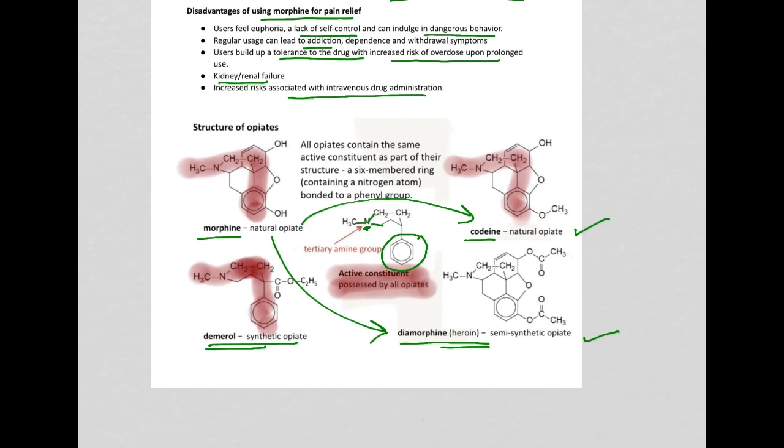It's called tertiary amine. Now, the differences between the structures: If you notice morphine, it has two OH, these are hydroxyl groups. Here you have a benzene ring. Over here, the double bond, this is an alkene. And this part here is called an ether group.